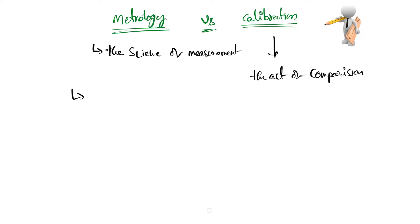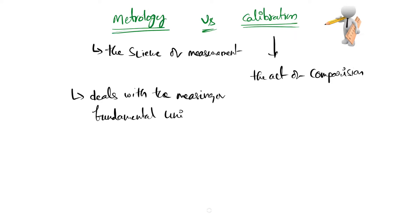Metrology deals with measuring the fundamental units such as length, mass, and time. The remaining units will be derived from these three fundamental units. In metrology, there are three types based on the application.